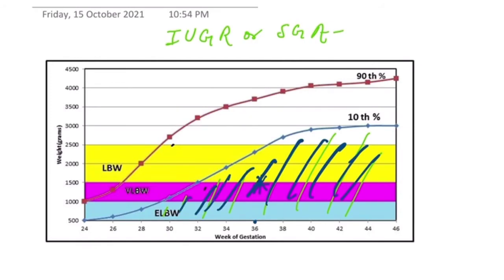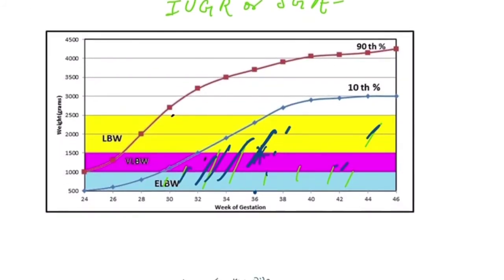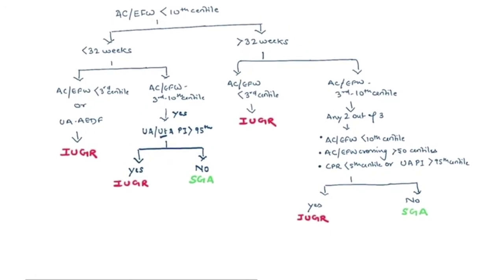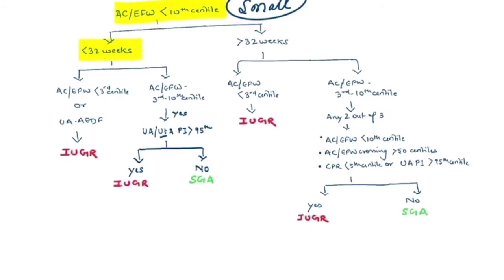Now, how do we differentiate whether the baby is pathologically small or constitutionally small? When the AC or EFW is less than the 10th percentile, we look at the gestational age at which the condition is diagnosed. If diagnosed at less than 32 weeks, we call it early onset.